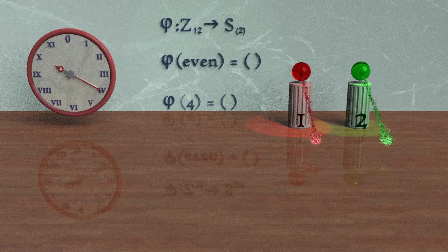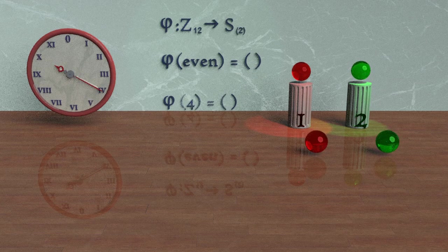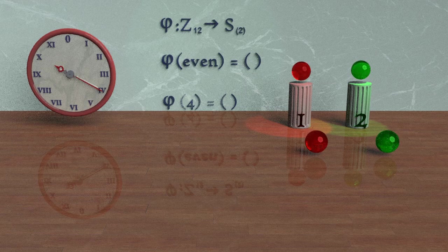So for example, if we are to perform the function phi on the number 4, since it is even, we would get the answer, the identity element.